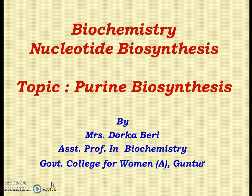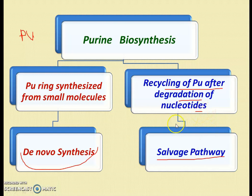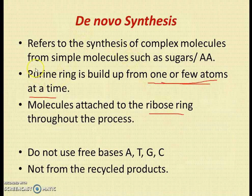Welcome to nucleotide biosynthesis. Today we cover purine biosynthesis. The nucleotides are adenine, guanine, thymine, cytosine, and uracil, divided into purines and pyrimidines. Purines are adenine and guanine. Purine biosynthesis can be done via two pathways: de novo synthesis and the salvage pathway. The salvage pathway involves recycling of degraded nucleotides.